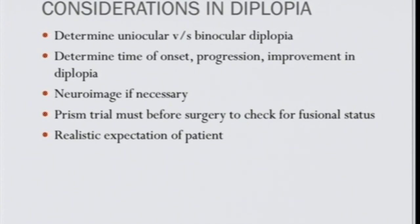For diplopia management, determine whether it is uniocular or binocular, and assess onset, progression, and improvement. Invariably there will be some diplopia for about one week post-operatively — persistent lifelong diplopia occurs in less than 2% of cases, even with stereopsis. Over-corrections also tend to settle within one to two weeks. A prism trial can be done — base-in or base-out prisms placed temporarily, or Fresnel prisms applied to glasses, or patching — before considering second surgery.